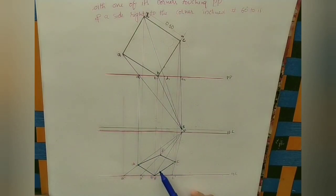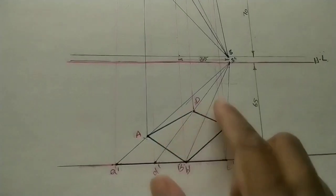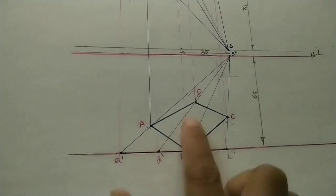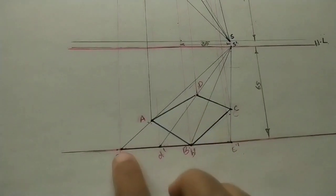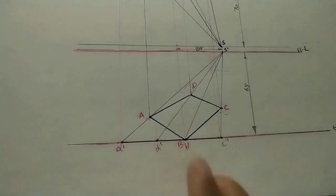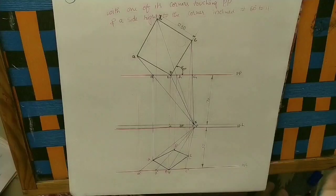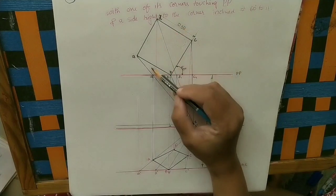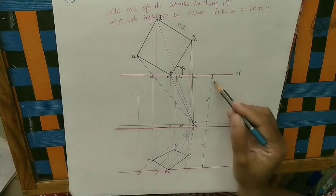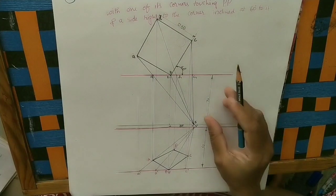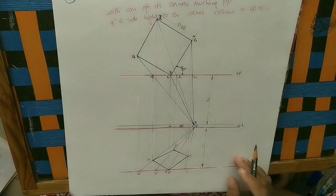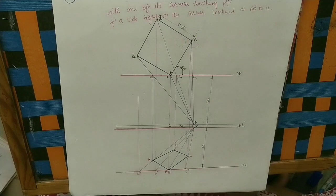Join capital A to B, B to C, C to D, and D to A using a scale. This is the perspective view of the square plane. The perspective view lines should be darker than all construction and projector lines. Note that a dash, b dash, c dash, d dash all fall on the same line — this is also the side view. Mark dimensions: side 50 mm, angle 60 degrees, station point 70 mm from PP, 65 mm above GP, and 35 mm from the corner. This is the method for drawing perspective views.